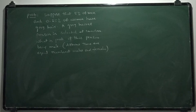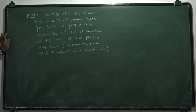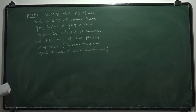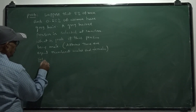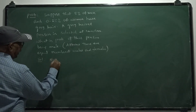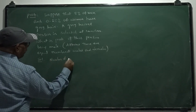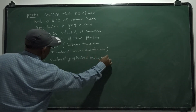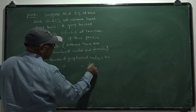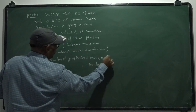Suppose that 5% of men and 0.25% of women have gray hair. A gray-haired person is selected here. What is the probability that the person is male, given that the number of males and females are equal?